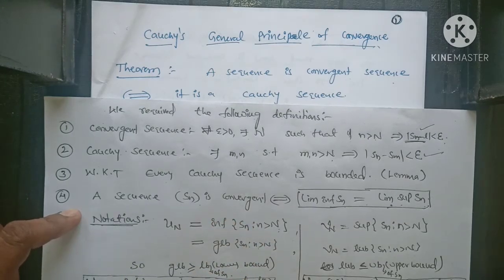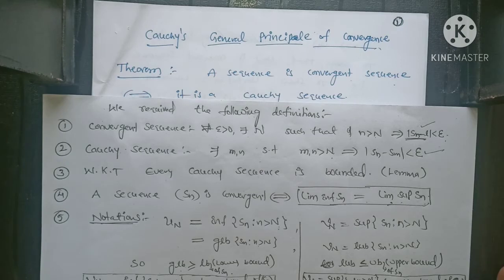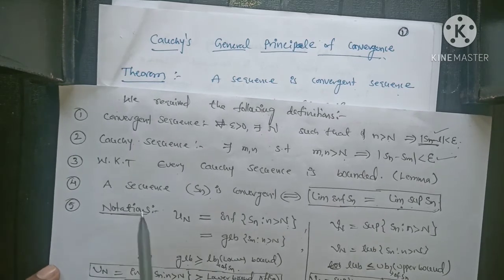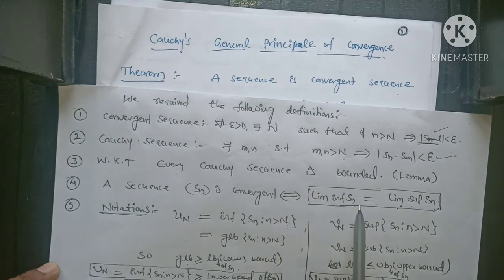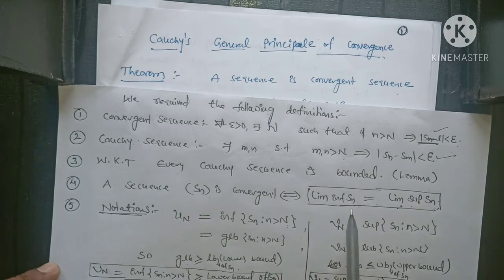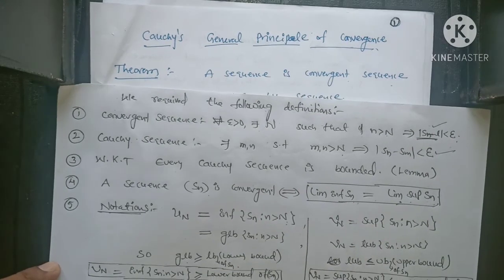Already we proved in the last lecture: every Cauchy sequence is a bounded sequence. And also we proved in the last lecture: every convergent sequence is a Cauchy sequence. A sequence Sn is convergent if and only if the limit inferior of Sn is equal to the limit superior of Sn. Already we proved certain problems using this condition.